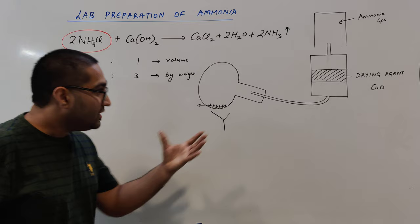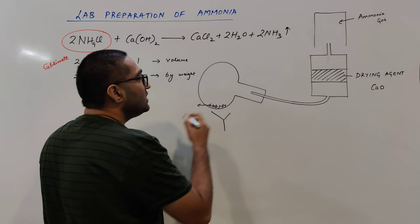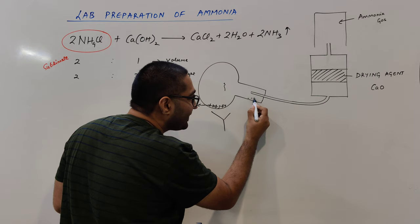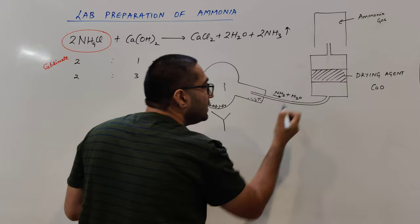Looking at the apparatus, the round-bottom flask is placed in a slanting position. The most important thing is moisture — the water formed in the reaction should not flow back into the flask. The moisture is collected at the lower end. In case some moisture goes up, it will mix with ammonia to form ammonia plus water.